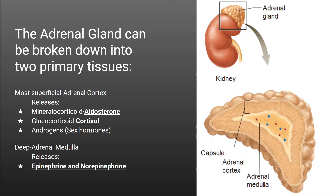The adrenal gland is located at the top of both of our kidneys and can be divided into a superficial section called the adrenal cortex and a deep portion called the adrenal medulla. The medulla is what can be stimulated by the sympathetic nervous system to release epinephrine into the bloodstream, but the cortex plays a vital role in blood osmotic concentration homeostasis, as well as modulating our body's response to long-term stress factors.